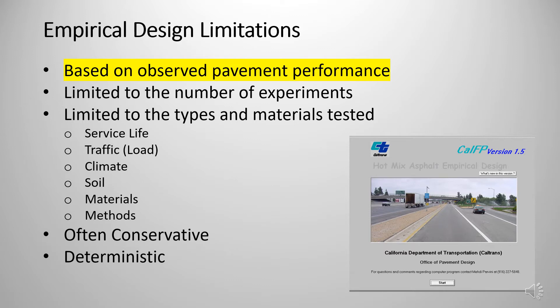Empirical design is based on observed pavement performance. Inherent in any experimental testing, the number, configurations, and conditions of the testing are limited. Empirical pavement design is not capable of properly addressing current heavy loads and high traffic, new materials or construction methods, different climates and soil types, and different pavement damages. Empirical methods are also often conservative. They are not cost effective, have a short design life of about 20 years, do not result in high performing pavements, and do not consider variability in the design.